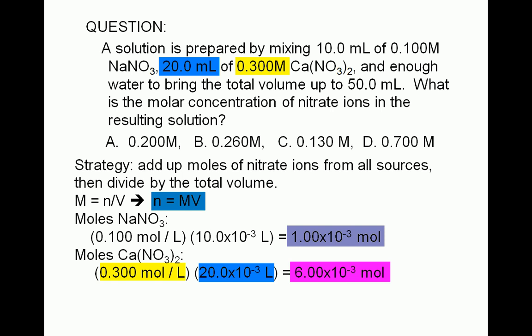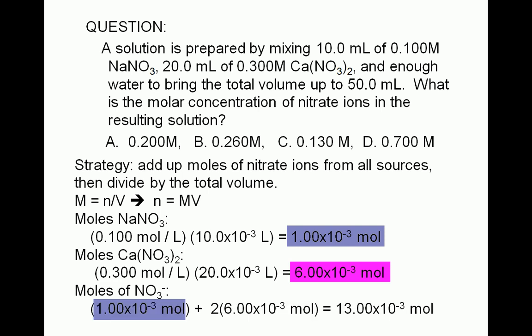Now, to get the total number of moles of the nitrate ions, we just add up the moles of sodium nitrate and the moles from calcium nitrate. Note that we multiply the number of moles of calcium nitrate by 2, because there are 2 moles of nitrate ions in every mole of calcium nitrate. Carrying out the indicated calculations gives us a total of 13.00 times 10 to the negative 3 moles of nitrate ions.